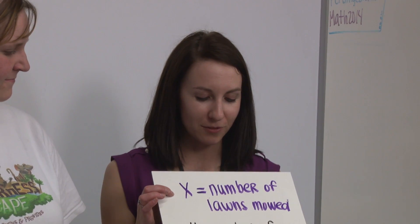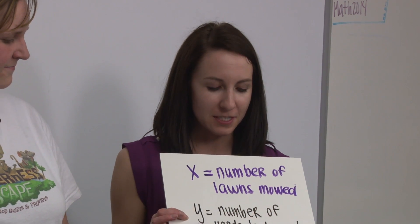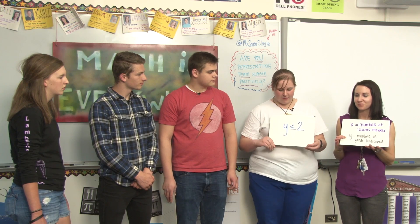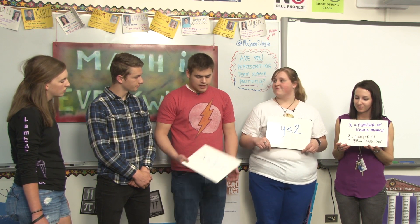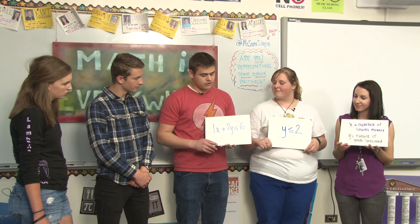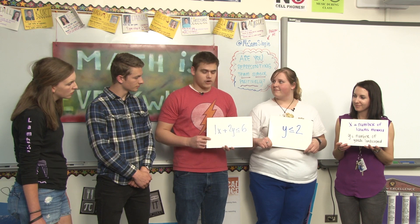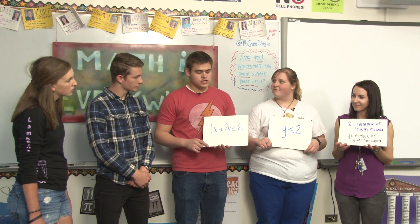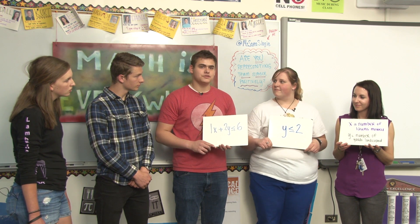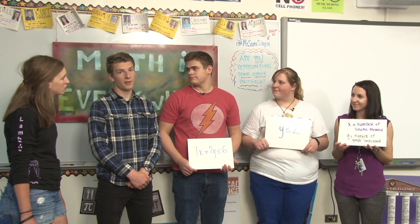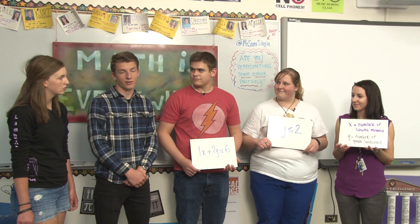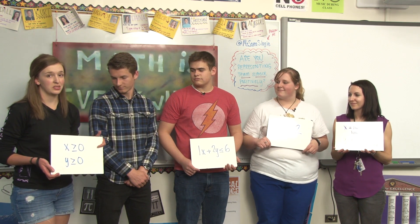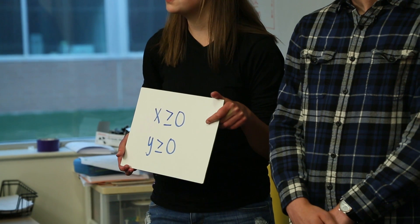So we'll let X represent the number of lawns mowed each day, and Y represent the number of yards landscaped each day. So Y is less than or equal to two, meaning they're going to landscape two or less yards per day. And one X plus two Y is less than or equal to six, which represents one hour per X lawns plus two hours per Y yards, all less than or equal to six hours. And remember, our domain cannot be negative — you can't mow a negative amount of lawns and you can't landscape a negative amount of yards. So X is greater than or equal to zero and Y is greater than or equal to zero, which means we'll be graphing in the first quadrant with positive X and Y values.